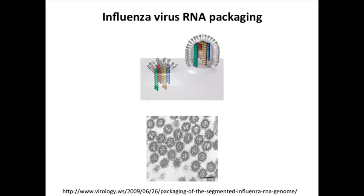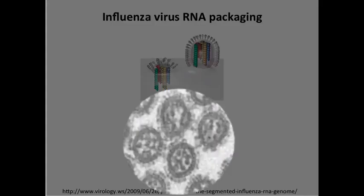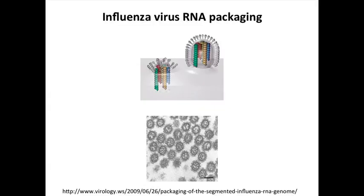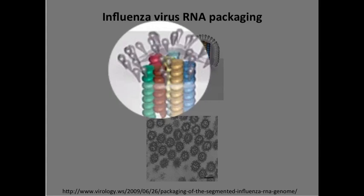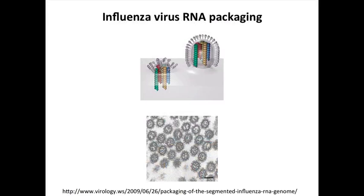Evidence for specific influenza packaging comes from electron micrographs of influenza particles, which show a quite regular arrangement of segments within each virion. Each spherical virion, with glycoproteins on the outside, shows a very specific arrangement of the 8 segments — they appear lined up in parallel within each virion. There is some evidence that sequences on the ends of each RNA specify this arrangement, so there could be signals on each genome that direct it into a particle rather than depending on a random packaging mechanism.